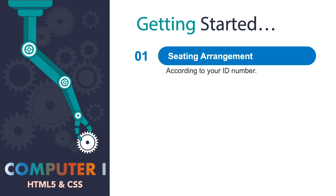To get started this school year 2020 and 2021, here is a list of guidelines for computer class. Number one: seating arrangement. By the time you enter the computer lab, a list of the seat arrangement is projected on the screen and it is according to your ID number.